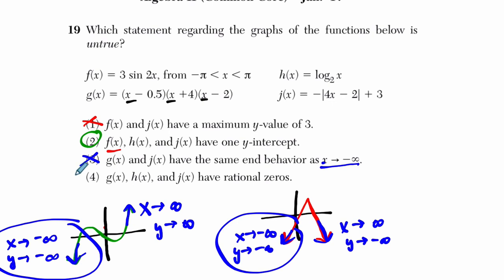G of X, H of X, and J of X have rational zeros. Okay. So if we look at G of X, let's start there first. The zeros are one half, negative four, and two. Those are the numbers. Right? If you set this equal to zero, this equal to zero, and this equal to zero, X equals one half, X equals negative four, and X equals two. That will get you a zero. Those are the zeros of the function. Those are rational numbers. Remember that rational numbers are just fractions, A over B, where both A and B are integers. And that's exactly what these are. This is one over two. This is negative four over one. And this is two over one.